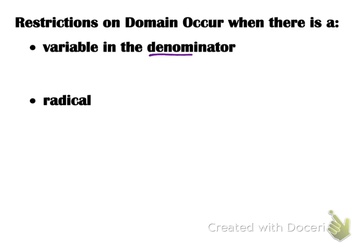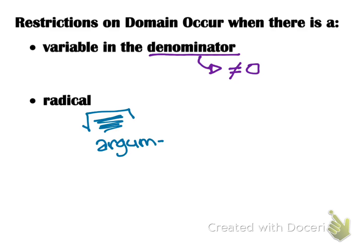If there's a variable in the denominator, we know that we cannot have the denominator equal 0. Any values of the variable that would result in the denominator equaling 0 will be restrictions. The second situation that creates a restriction on the domain is when we have a square root symbol with a variable inside it. Whatever is in there is called the argument, and the argument has to be greater than or equal to 0, because if we take the square root of a negative number, we end up with an imaginary number.